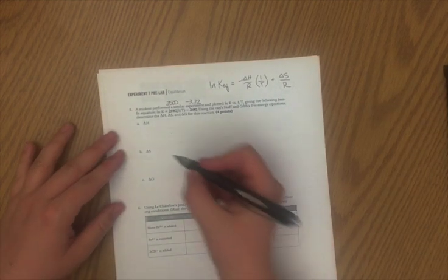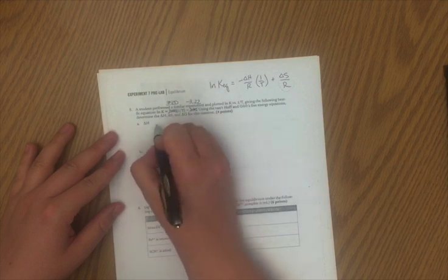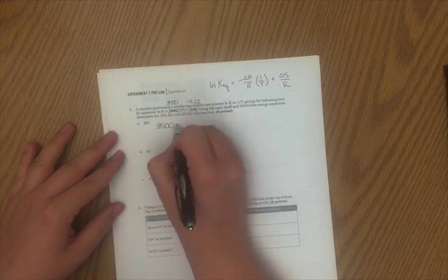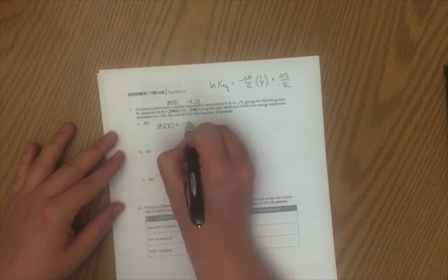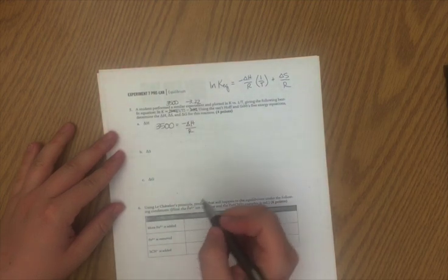So to find ΔH, all I'm going to do is take my slope value, and that equals negative ΔH over R. R, in this case, we're going to want to use 8.314 joules per mole Kelvin.